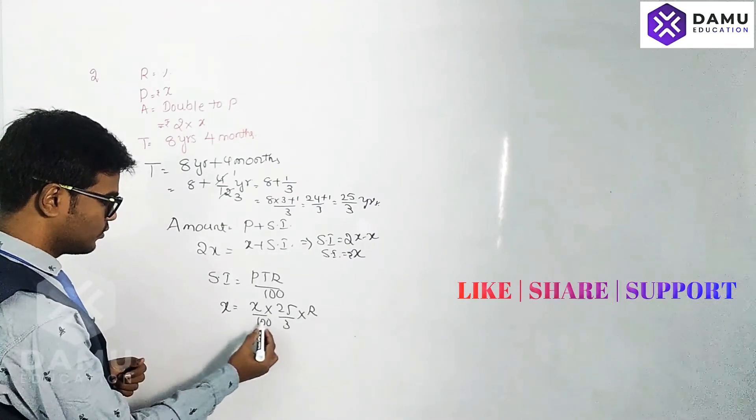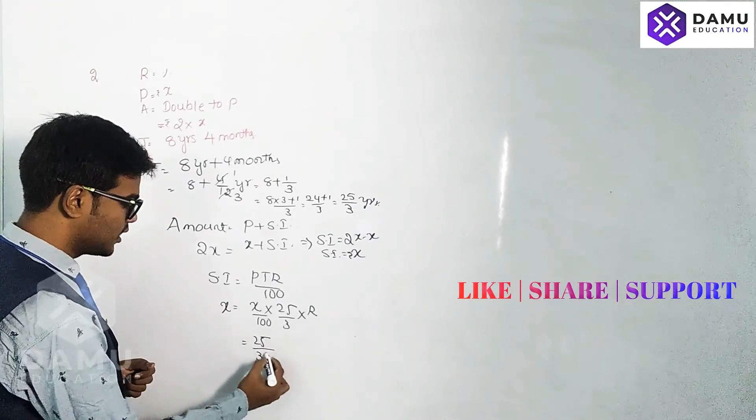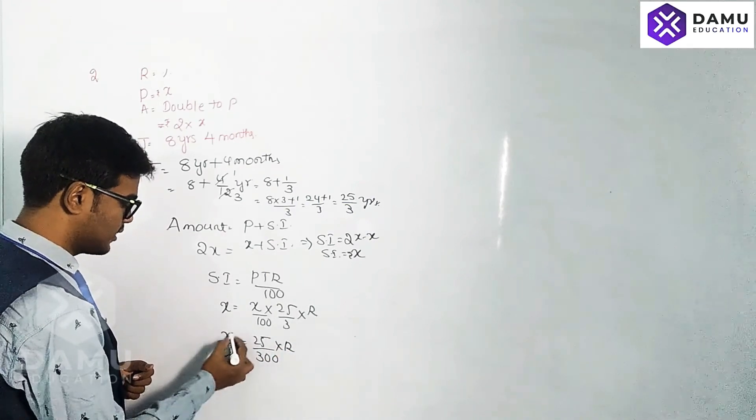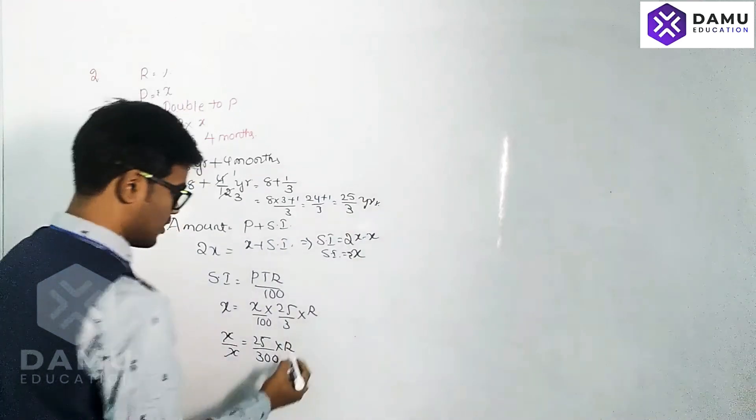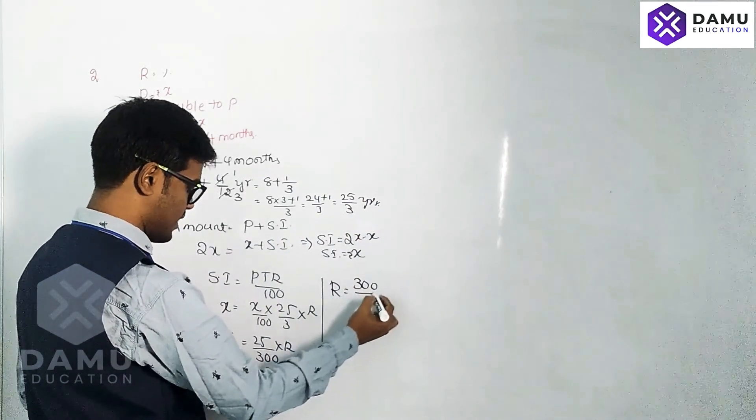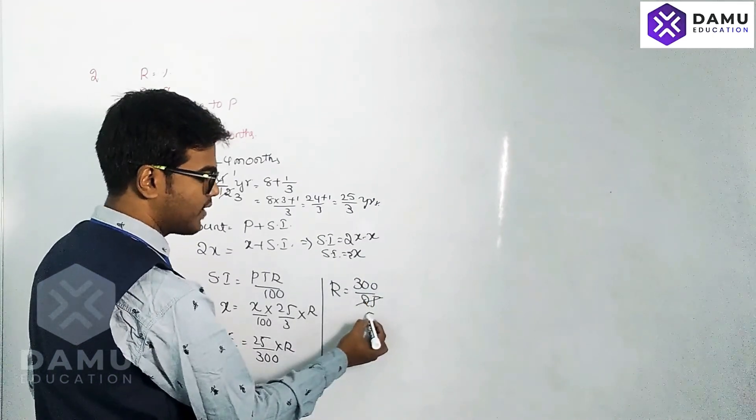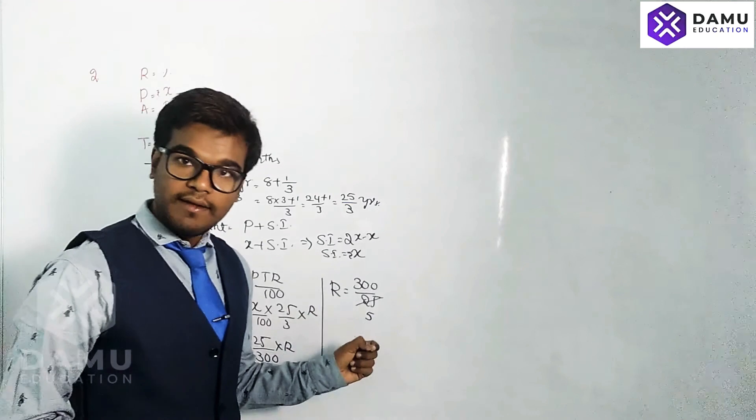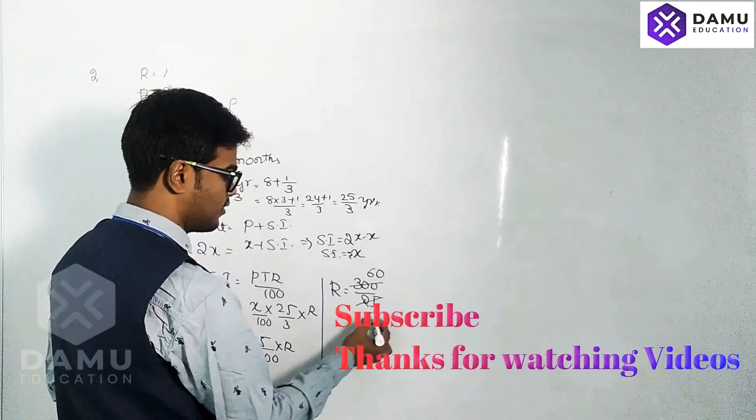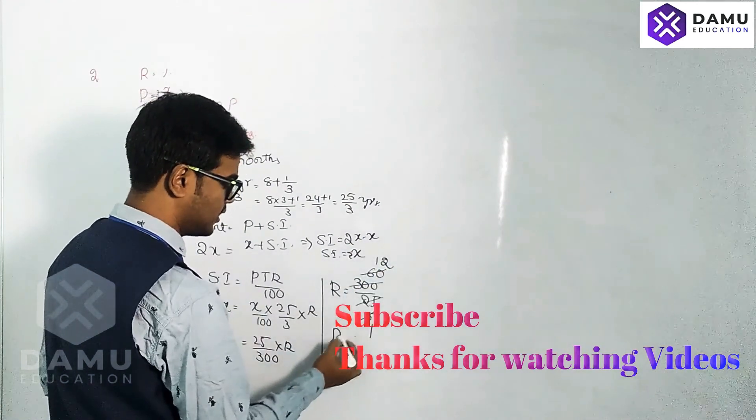So shifting all the values: 25 by 300 into R equals X. X by X cancels, then R equals 300 by 25. What is this? 5 into 25 is 125, 6 times 25 is 150. So R equals 12 percentage.